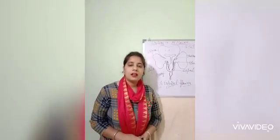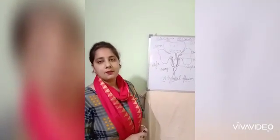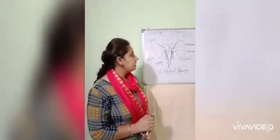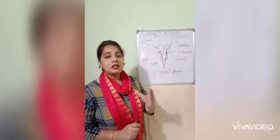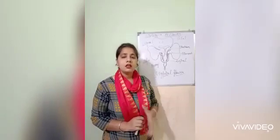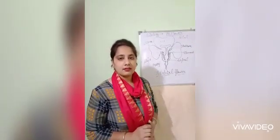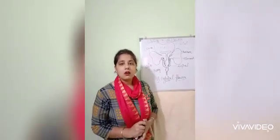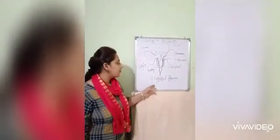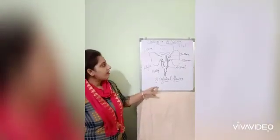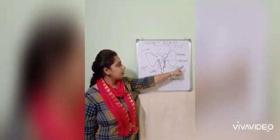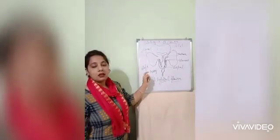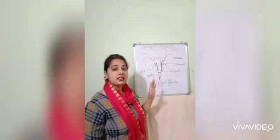Hello everyone, welcome to my biology class. Today we start with the chapter on the flower. A flower may differ in color, size, and shape, but the basic structure remains the same in each and every flower of different plants. These flowers are attached to the stem by a stalk called pedicel. The basic structure includes various parts: petal, anther, filament, sepal, ovary, style, and stigma — these parts are present in each and every flower.